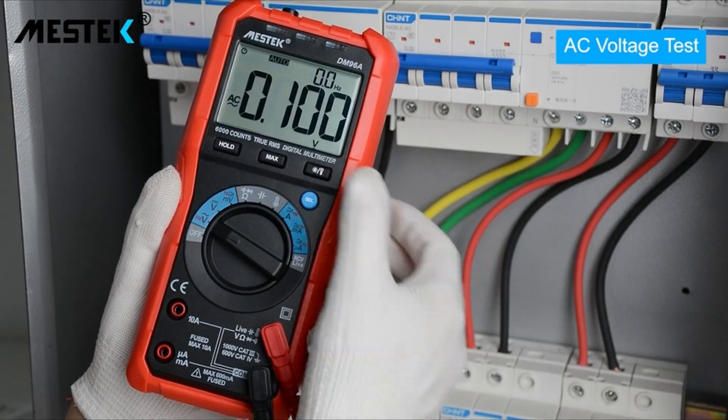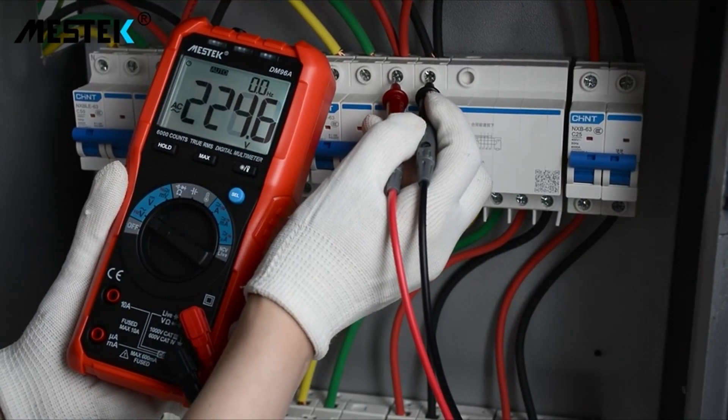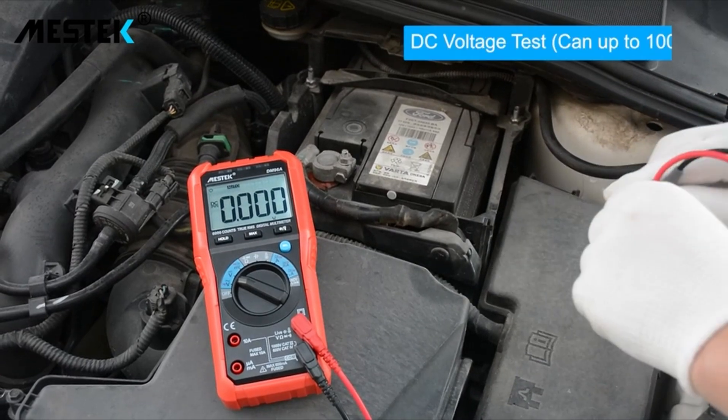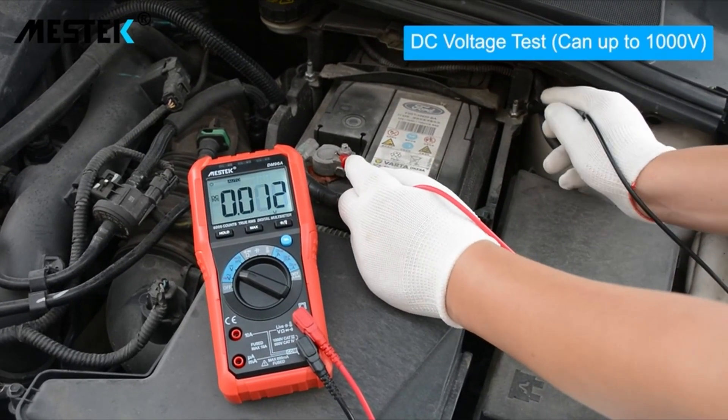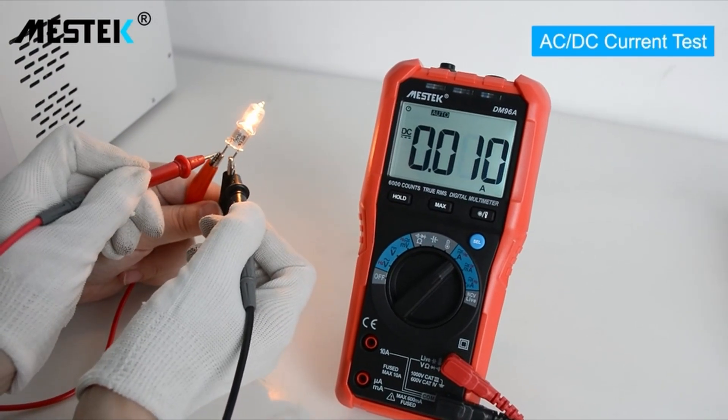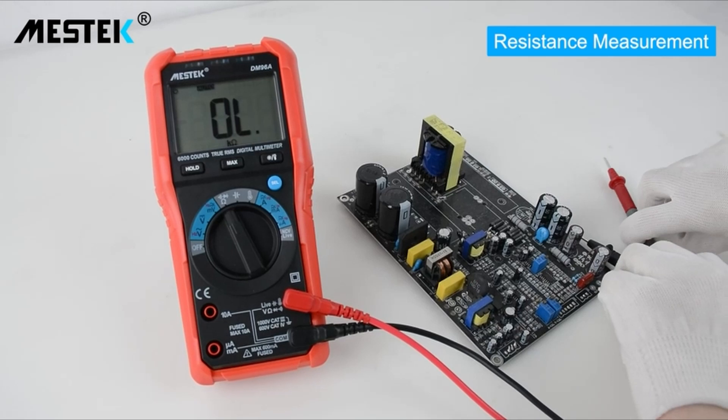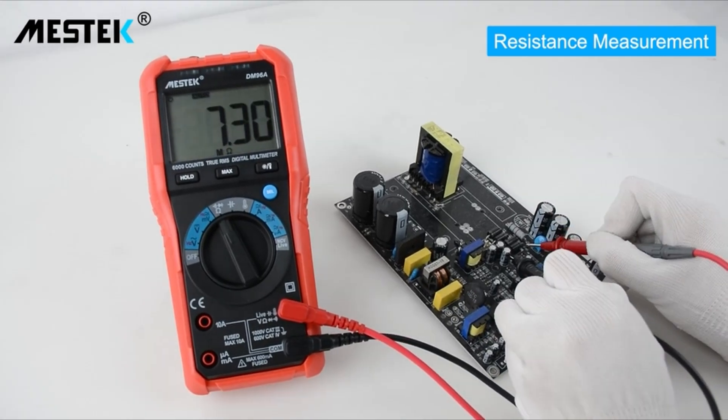This multifunction multimeter tester is engineered to meet the demands of both professionals and DIY enthusiasts, offering a comprehensive set of measurement capabilities all in one compact device. Impressive measurement range, the Mestec TRMS 6000 boasts an impressive measurement range, making it a versatile tool for various applications.